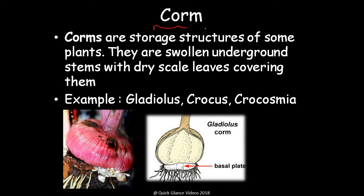A corm is also a storage structure of a plant. Corms are swollen underground stems covered by dry scale leaves. This is also a means of vegetative propagation. Examples include Gladiolus, Crocus, and Crocosmia.